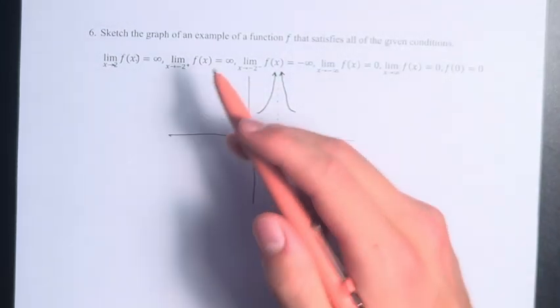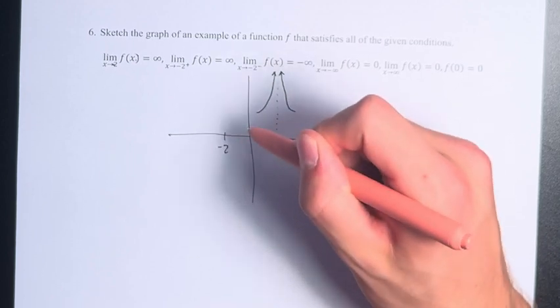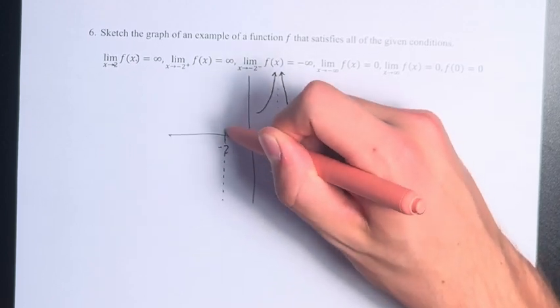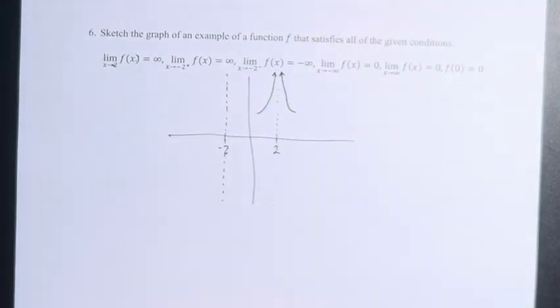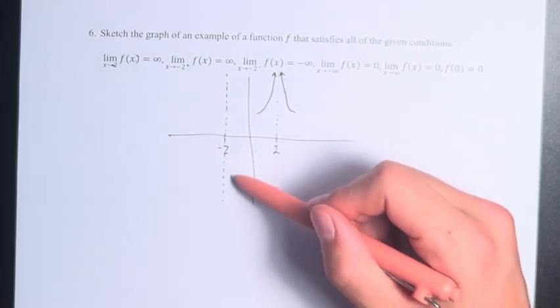Contrast that with x approaching negative 2, where we also have a vertical asymptote. However, the limit as x approaches negative 2 from the left and the right are different. As we approach negative 2 from the right, that's from values greater than negative 2, so that's on this side of the line.